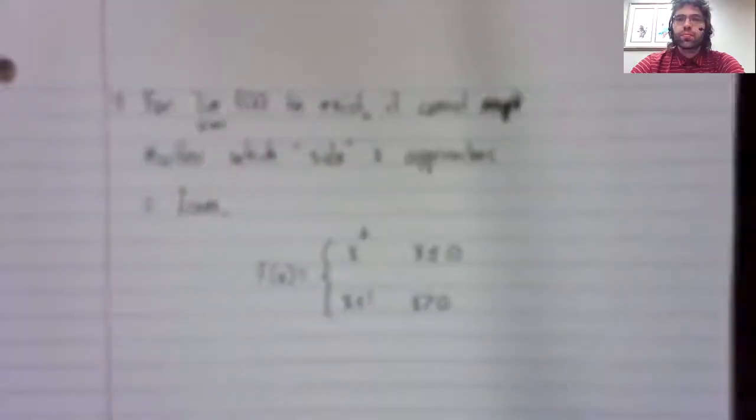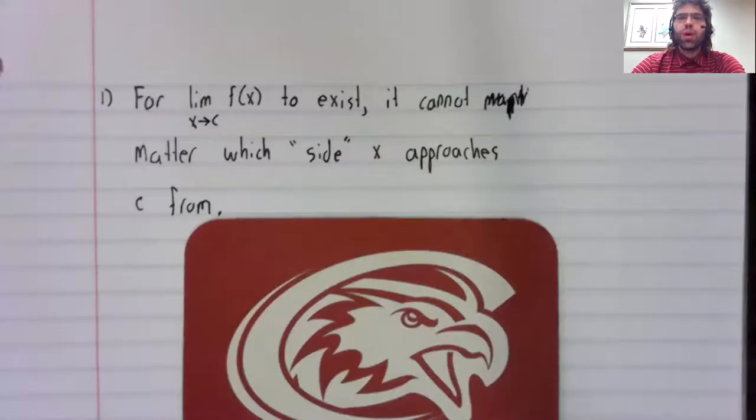A limit might not exist. There are three main reasons that a limit might not exist, and we'll run through each of these in turn.